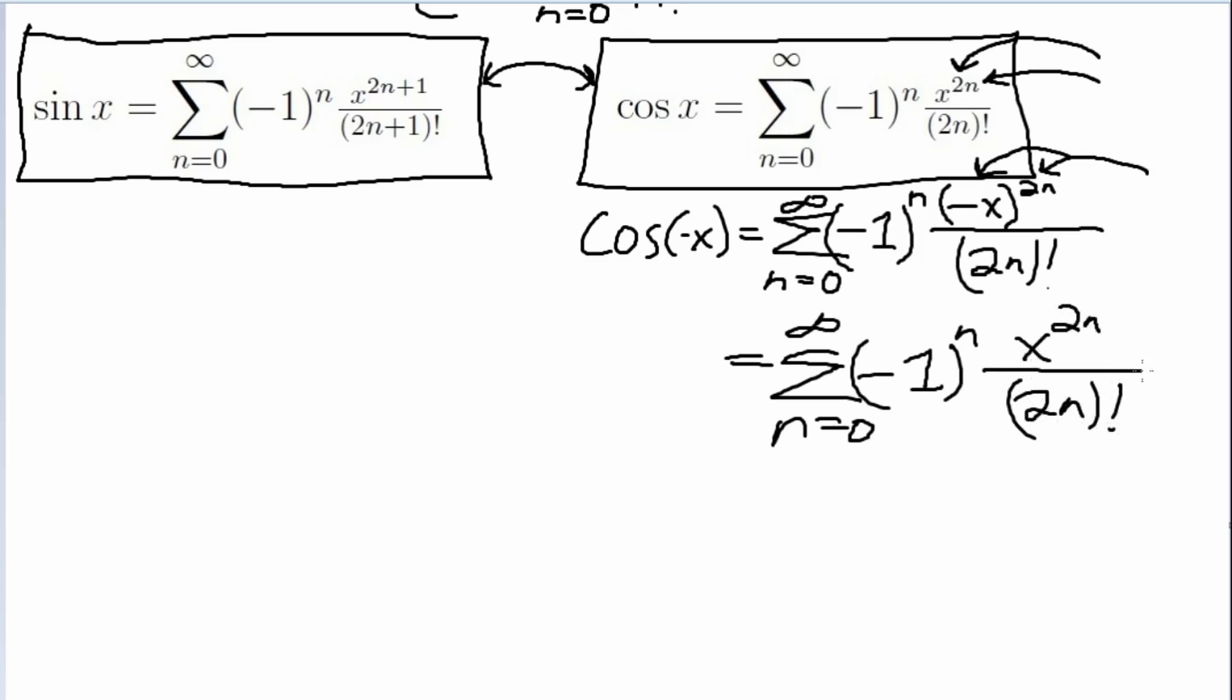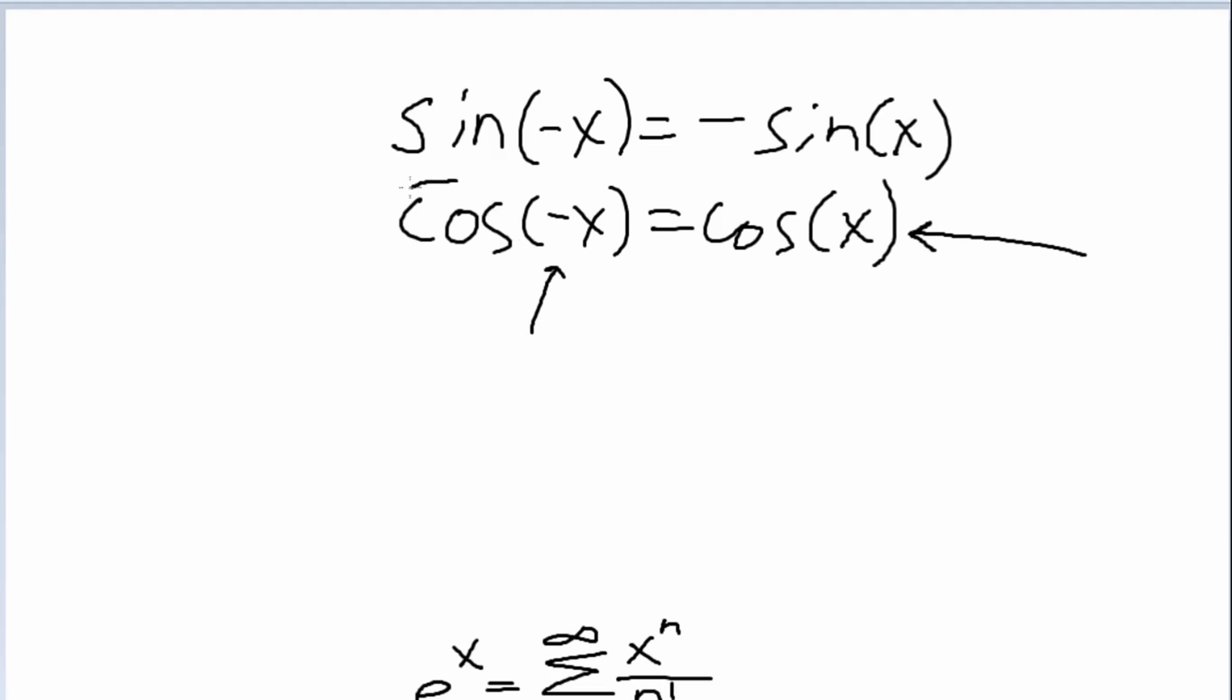And what we have here is indeed exactly this analytic definition of cosine. So we can just write cosine of x, and we've already proved that this property holds.